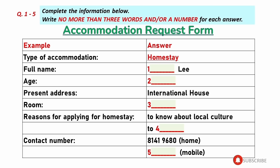Good morning. Good morning. I'd like to apply for a homestay. Right. Sit down, please. Well, I need to take down your details first. What's your full name? My name is Aaron Lee. Do you spell your first name A-A-R-O-N? Yes.